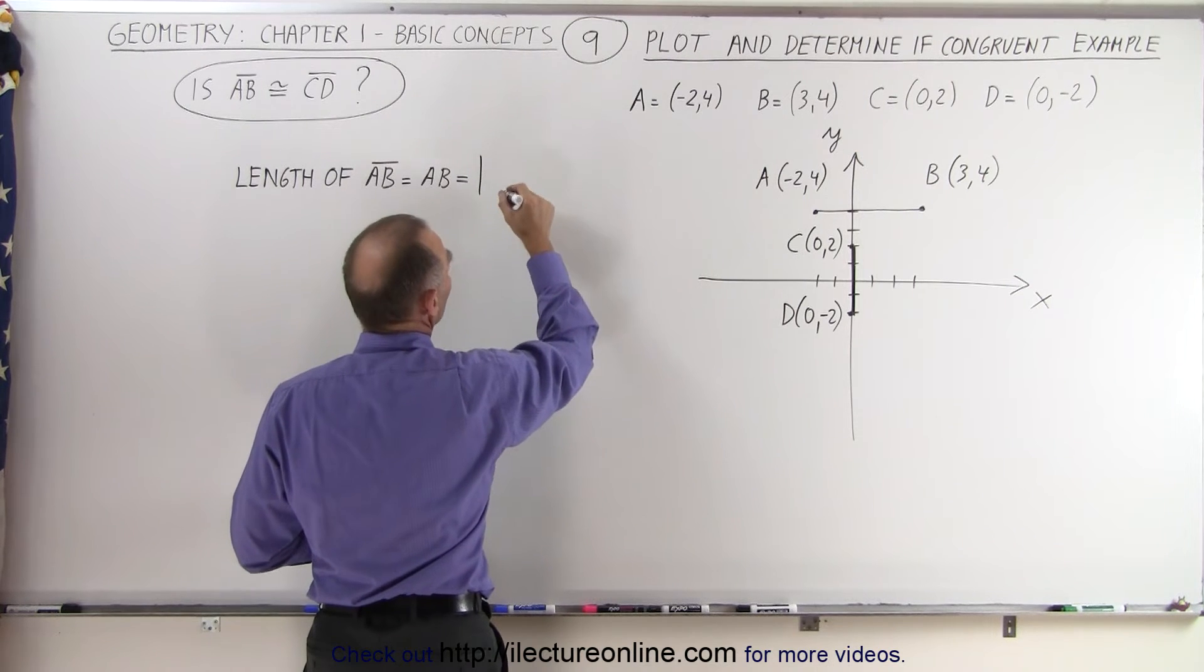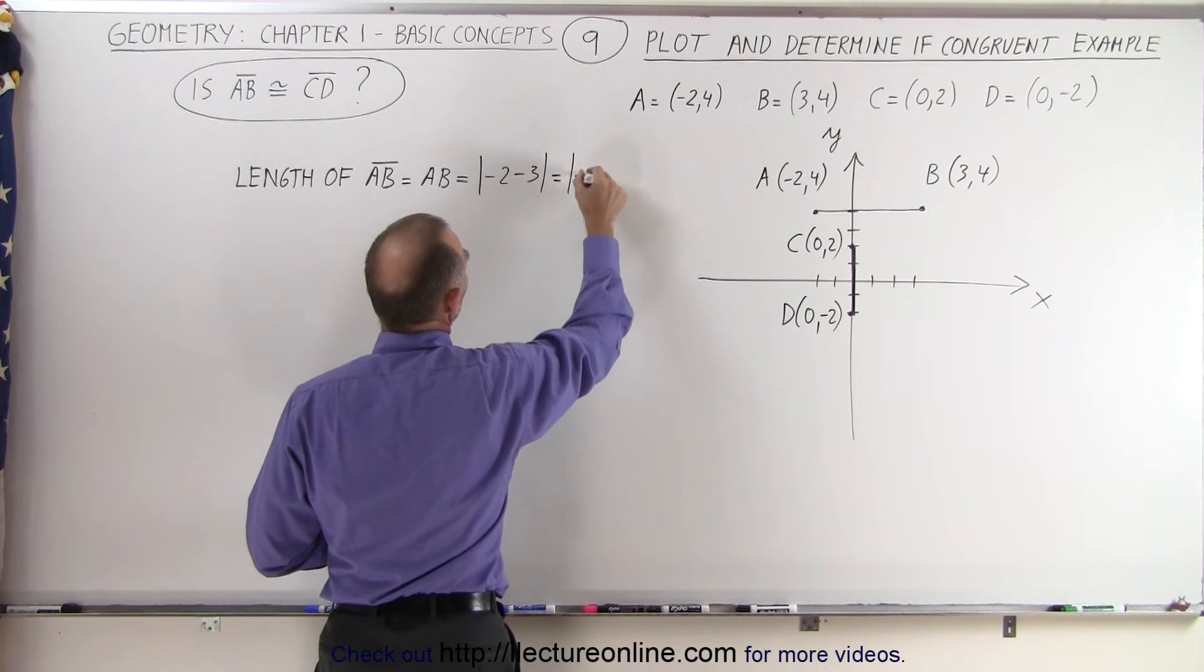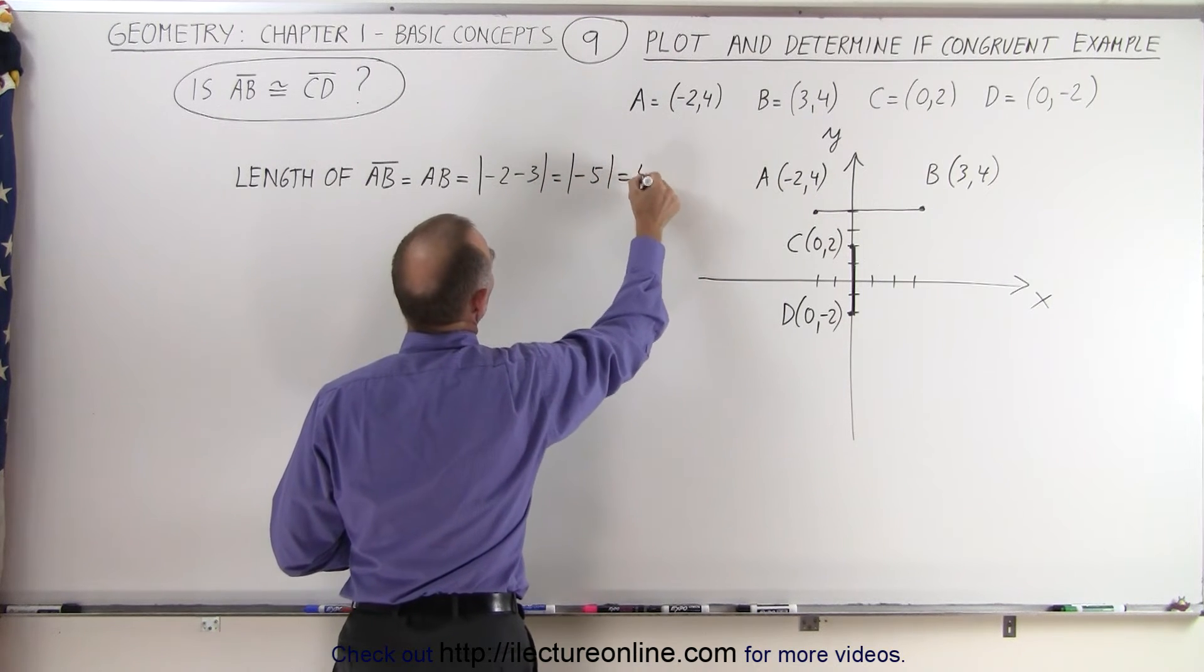So that would be the absolute value of negative 2 minus 3, which is equal to the absolute value of negative 5, which is 5.